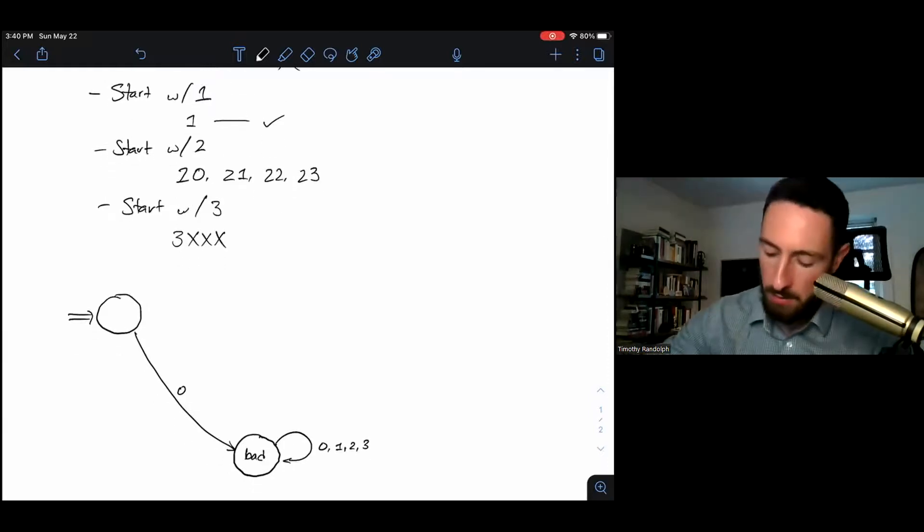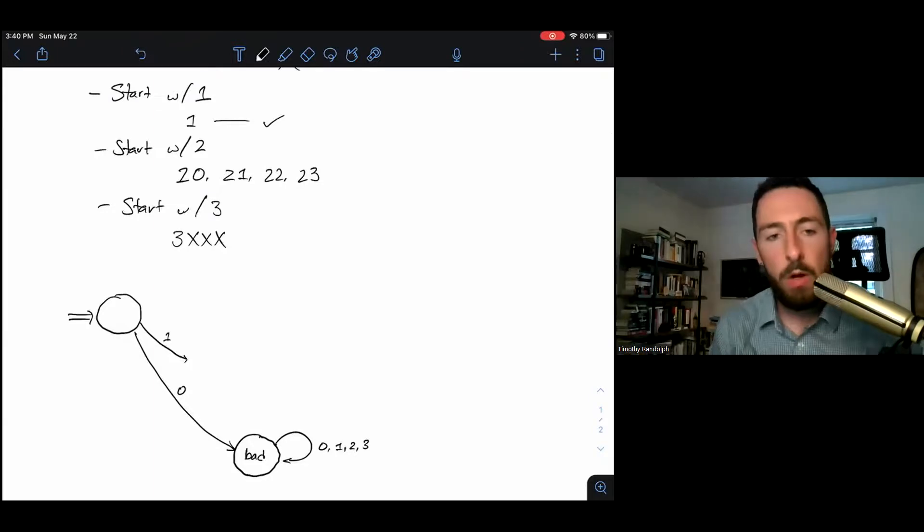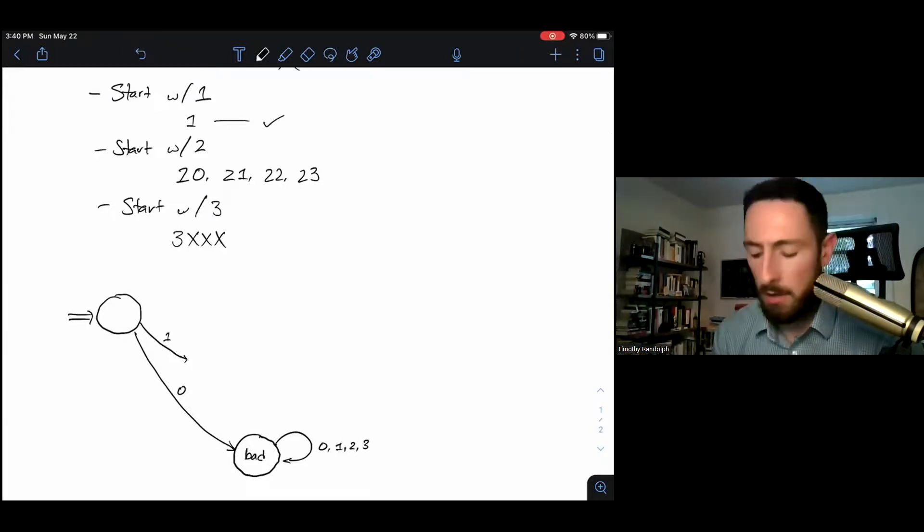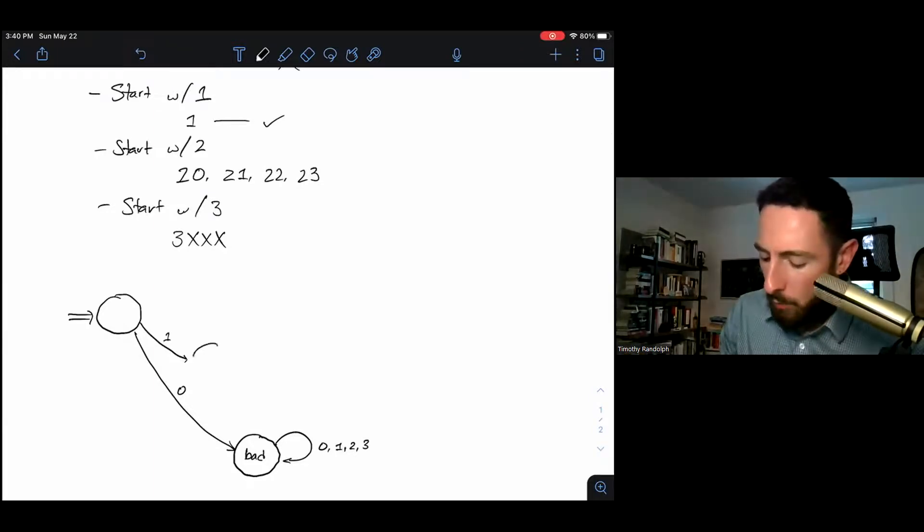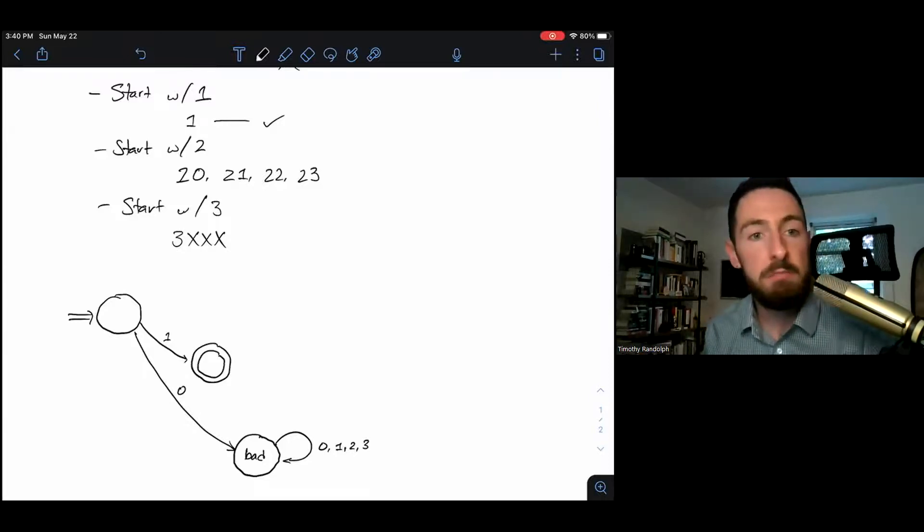What about if we start with a one? I read in a one. I'm at my start state. I see a one. What do I want to happen now? If I just read in a one, then great, I'm going to accept. I've seen the exact only string that starts with one and has one character. So I'll make that an accept state.